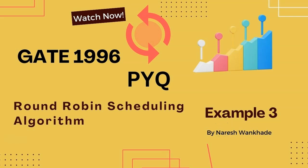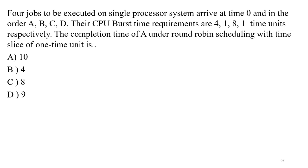Hello friends. In this video lecture we will see a problem based on the round-robin scheduling algorithm which was asked in the GATE 1996 exam. The question is: four jobs to be executed on a single processor system arrive at time zero in the order A, B, C, D. Their CPU burst time requirements are 4, 1, 8, and 1 time units respectively. The completion time of A under round-robin scheduling with a time slice of one time unit is — four options are provided.